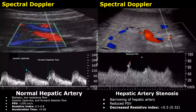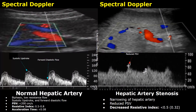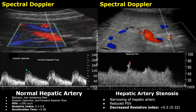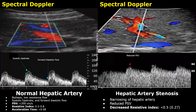Hepatic artery stenosis is another complication of liver transplantation, in which there is narrowing of the hepatic artery due to thrombosis or other causes. When there is stenosis, the PSV can be reduced while the EDV remains normal. Since there is not a significant difference between PSV and EDV, the resistive index is decreased. The PSV here is around 60 cm per second and the EDV is around 50 cm per second. Here is another case of hepatic artery stenosis where the PSV is reduced and the resistive index is reduced as well — it is 0.27 in this case.